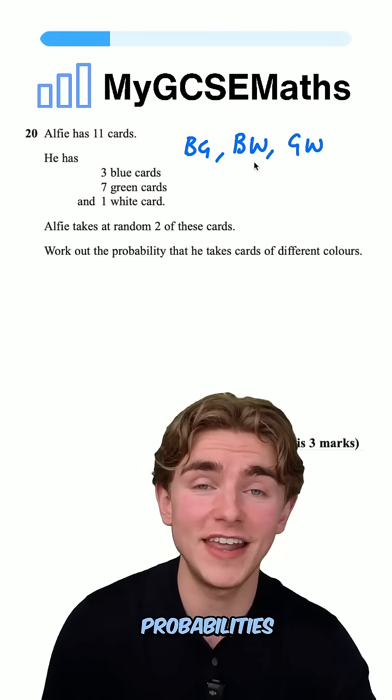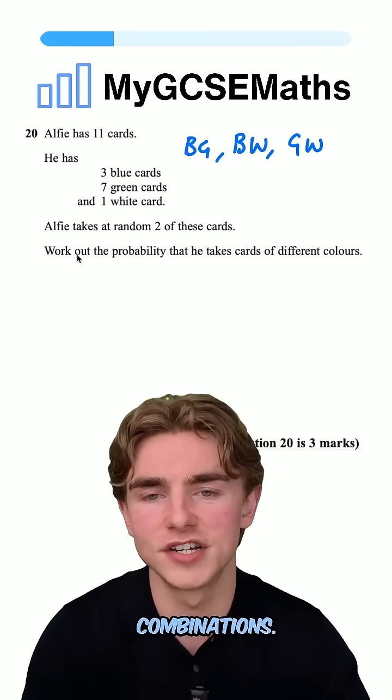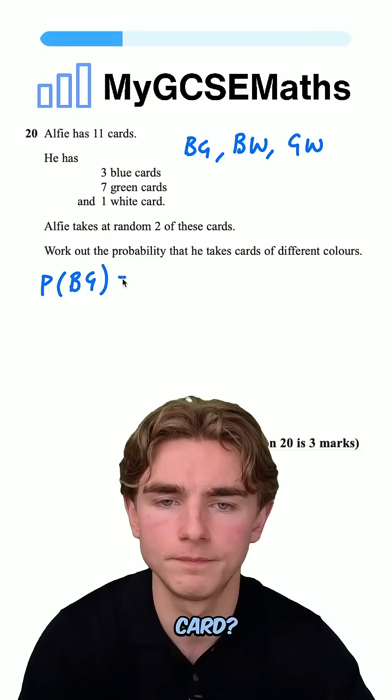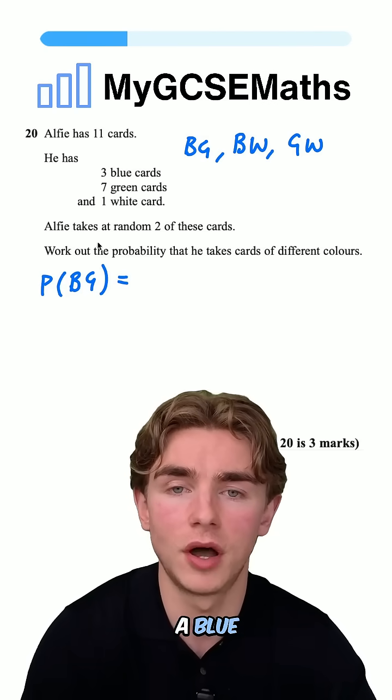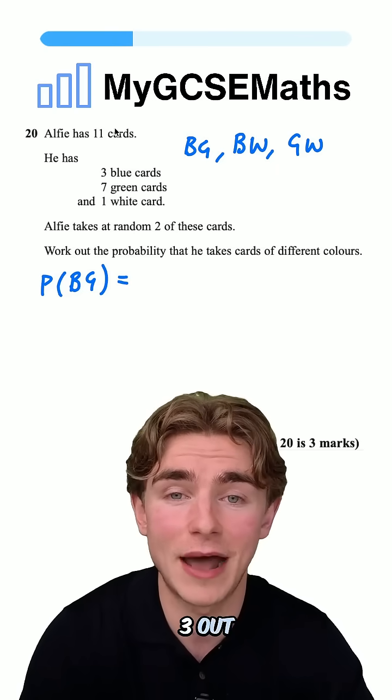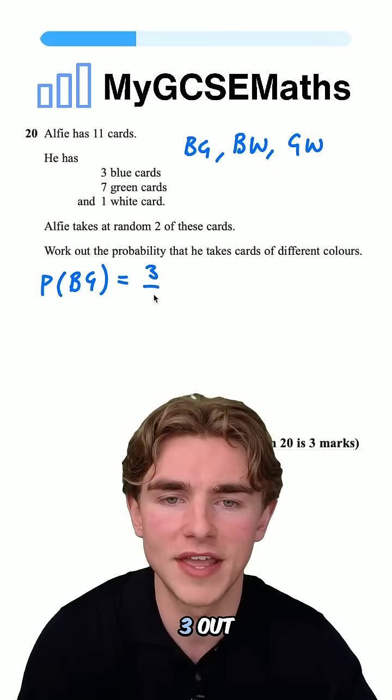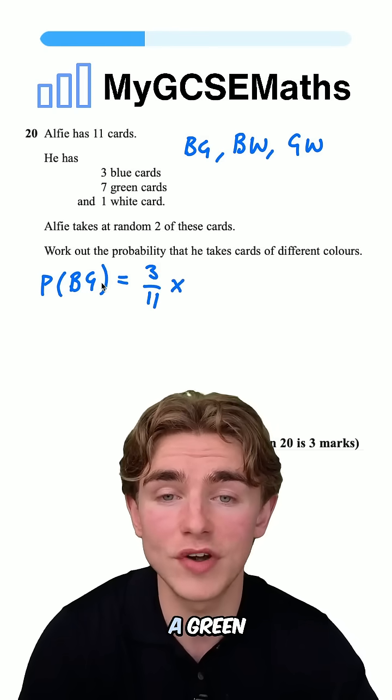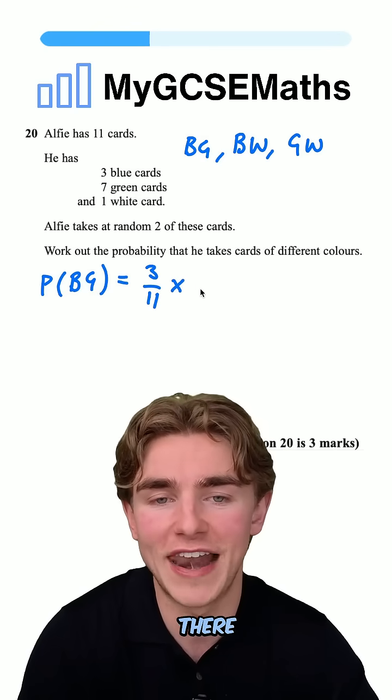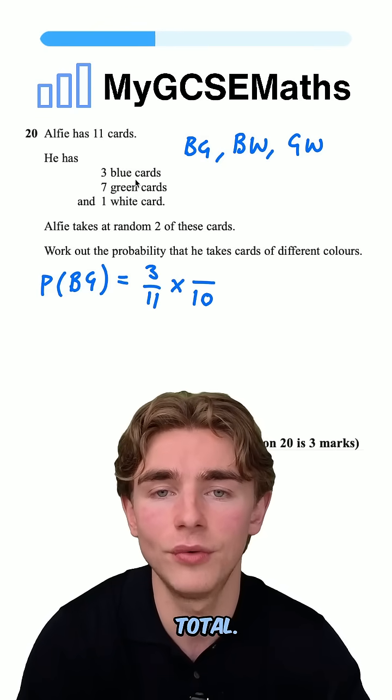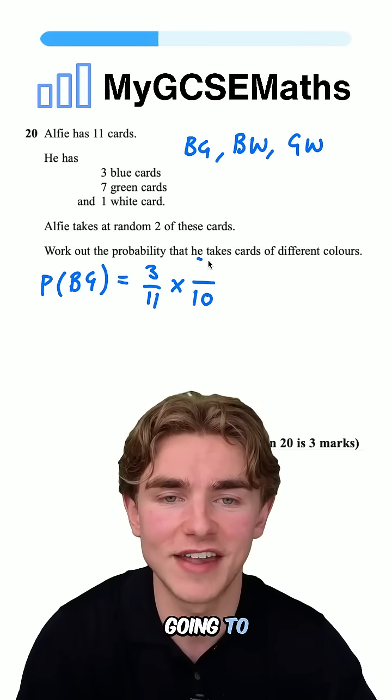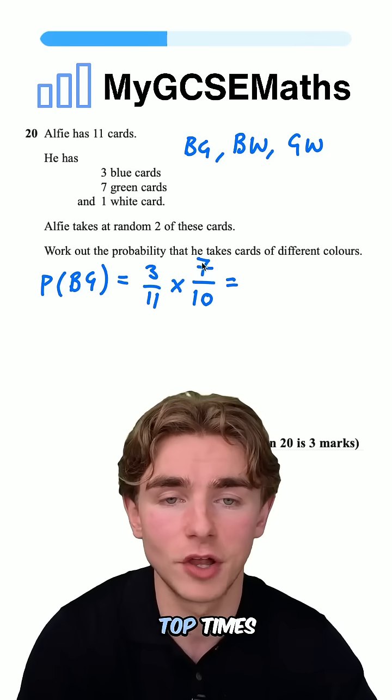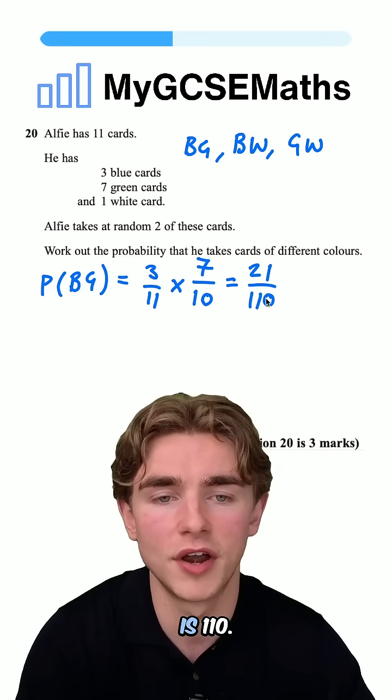Next, we need to work out the probabilities of choosing these combinations. What's the probability of choosing a blue card and a green card? The probability of choosing a blue card is 3 out of 11. Then we multiply by the probability of choosing a green card on the next choice. We've taken one card, so there's 10 left. How many green cards are left? Seven. So we have 3/11 times 7/10. Top times top is 21, bottom times bottom is 110.